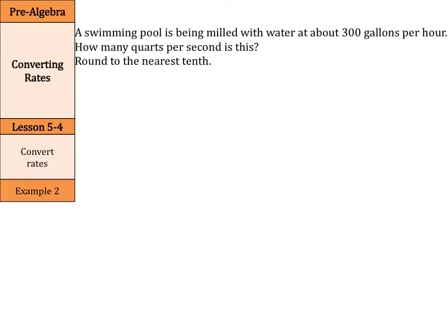A swimming pool is being filled with water at about 300 gallons per hour. How many quarts per second is this, rounded to the nearest tenth? Let's take our rate of 300 gallons over 1 hour, and we want to eventually get this to quarts per second.